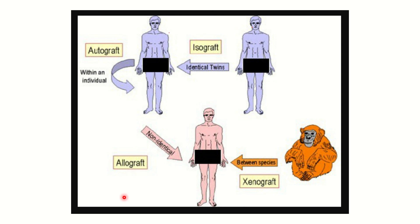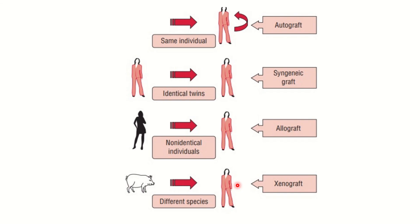The final type is xenograft: when tissue is received from another species — such as from a monkey or a pig — and transplanted into a human, or from any other animal transplanted into another species, it is called a xenograft.